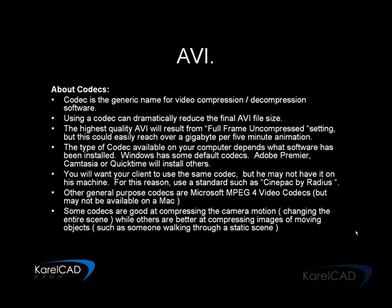When you create an AVI, you must use a codec. A codec is the generic name given to video compression or decompression software. The codec can reduce the final AVI size very dramatically. The highest quality AVI results from a full-frame uncompressed setting, but most of the time that's far too large — it could be over a gigabyte per five-minute animation.